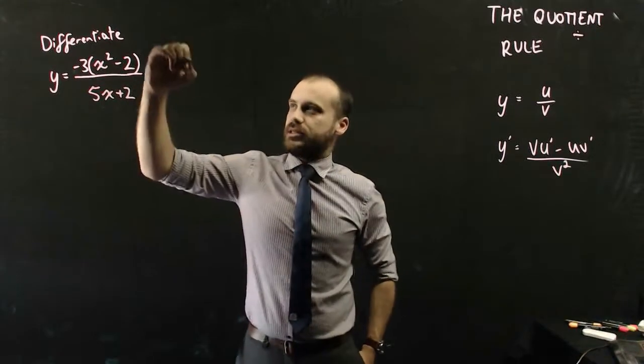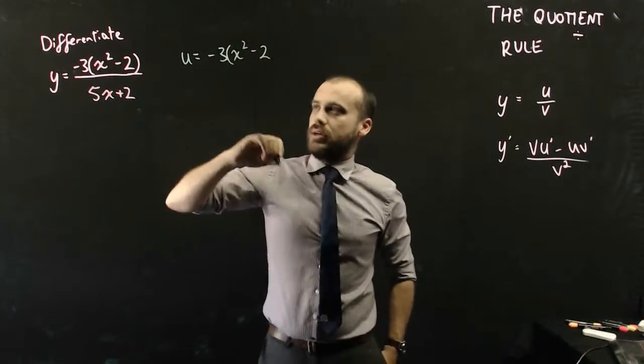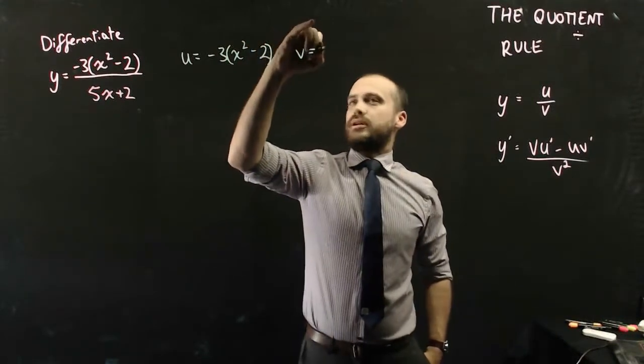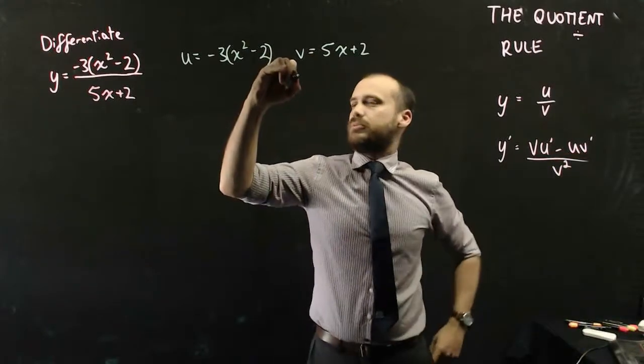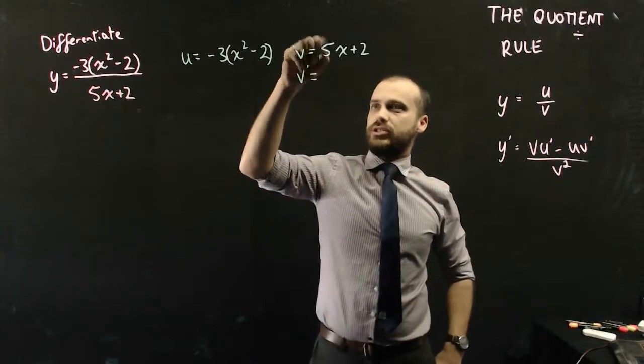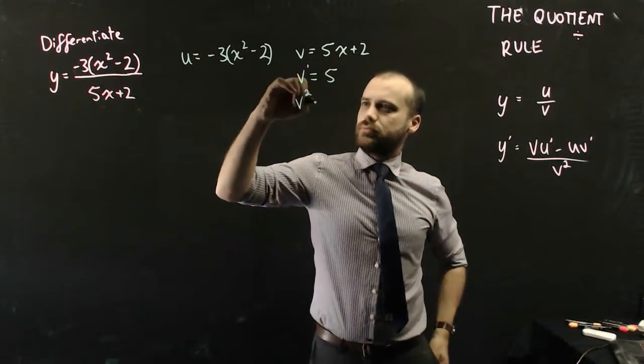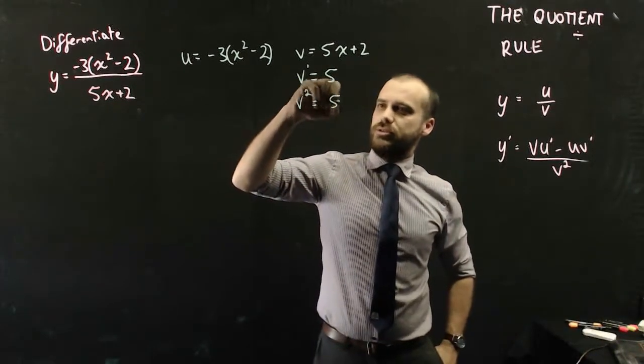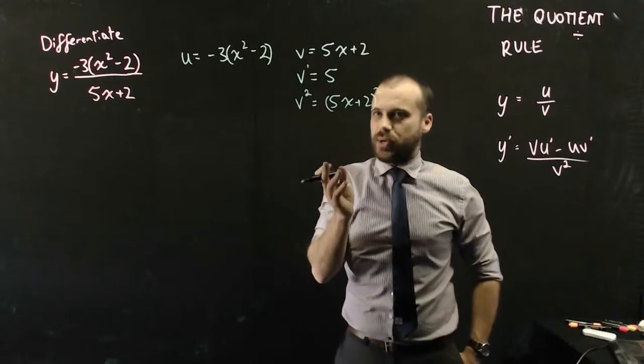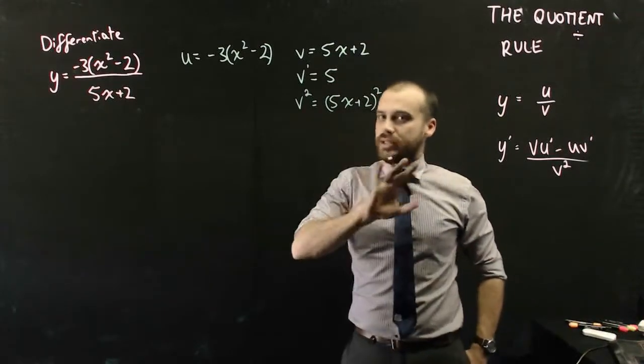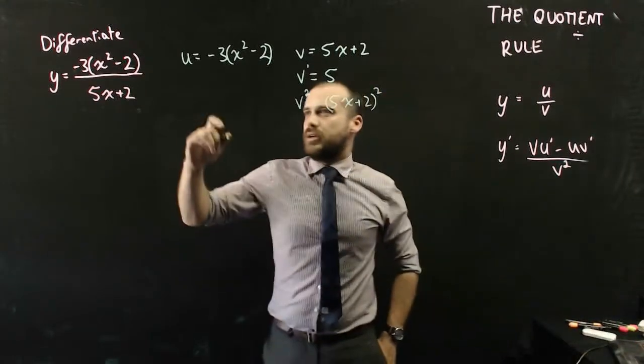So I'm just going to make a little list here. Now that means that u is negative 3(x squared minus 2). I'll just do v because obviously that's pretty easy. v is 5x plus 2. Now I'm going to need v dash at some point, so I might just do v dash. That's just going to be 5. And I'm also going to need v squared. And that's just (5x plus 2) all squared. And it's going to be tempting there to say that it's like 10x squared or 25x squared plus 4. It's not. You've got to multiply that by itself. But we're just going to leave it like that for now. That keeps it nice and neat.